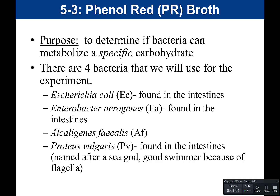In this experiment, we are doing this with four bacteria. We will be using E. coli, abbreviated EC — a gram-negative bacteria found in the intestines. We also have Enterobacter aerogenes, abbreviated EA, also gram-negative and found in the intestines. We have Alcaligenes faecalis — think feces — which is also found in the intestines and is also gram-negative.